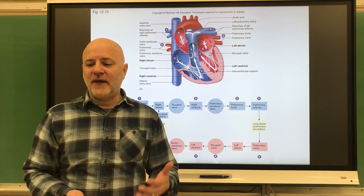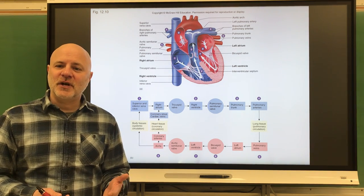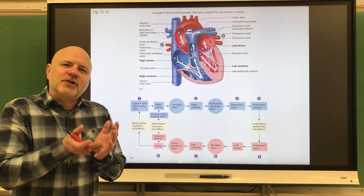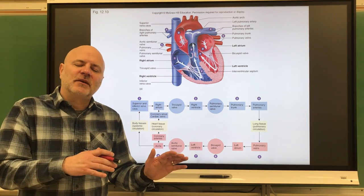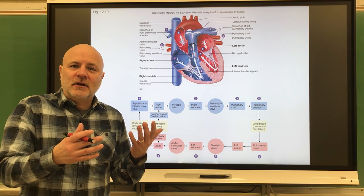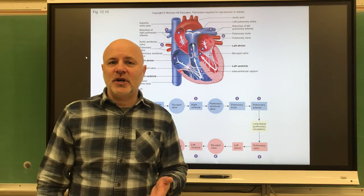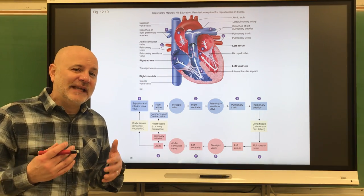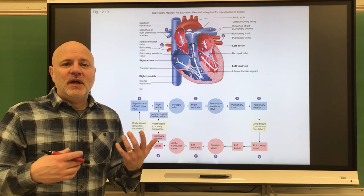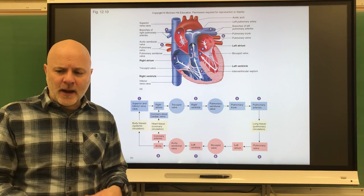Systole is a phase when a heart chamber wall contracts. If we think about that with blood pressure, we're pushing blood out of the heart, so more blood is in the blood vessels and the blood pressure will be higher. Diastole is a phase when a heart chamber wall relaxes — blood is filling into that chamber, so there's less blood in the blood vessels and blood pressure will go down.